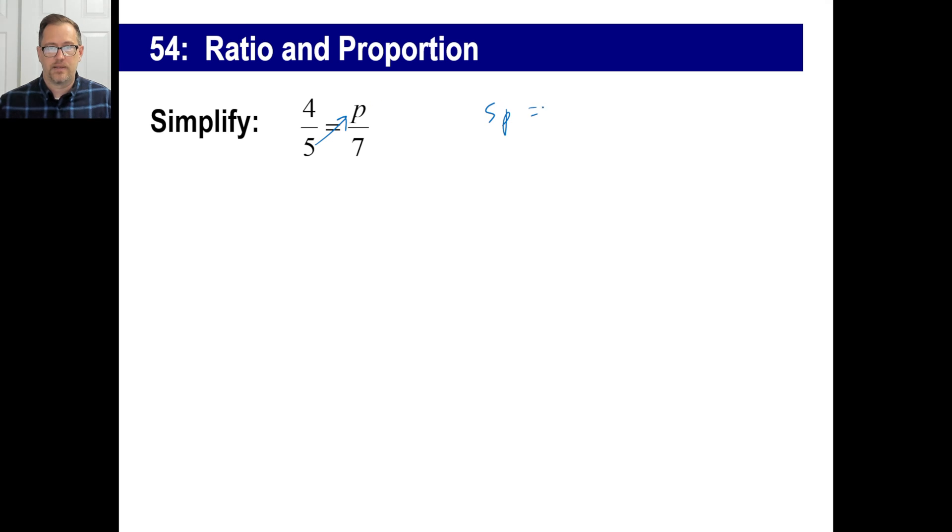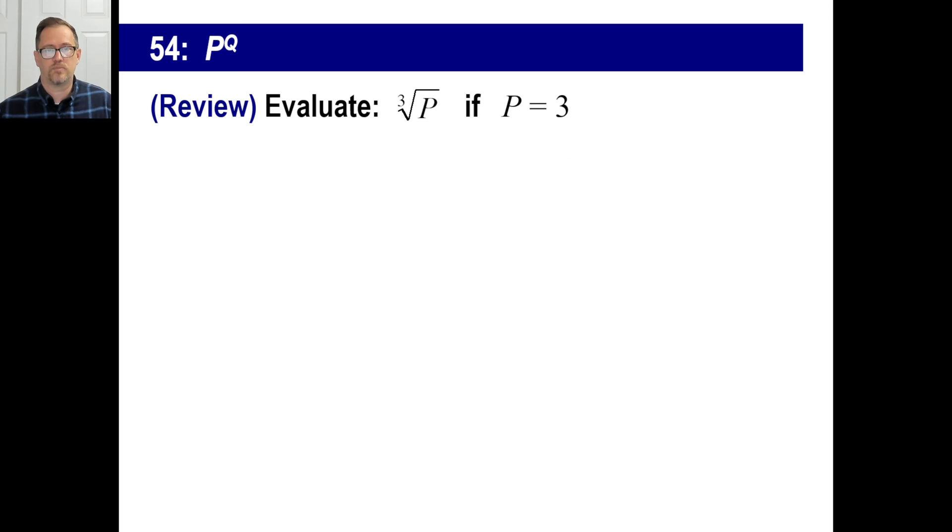That equals 4 times 7, which is 28. And the last thing you have to do is just divide by 5. And there you go. You can leave it. 28 over 5 is fine. In the back of your book, they might have, you know, 5 and 3 fifths or whatever. That's it. Ratio and proportion.